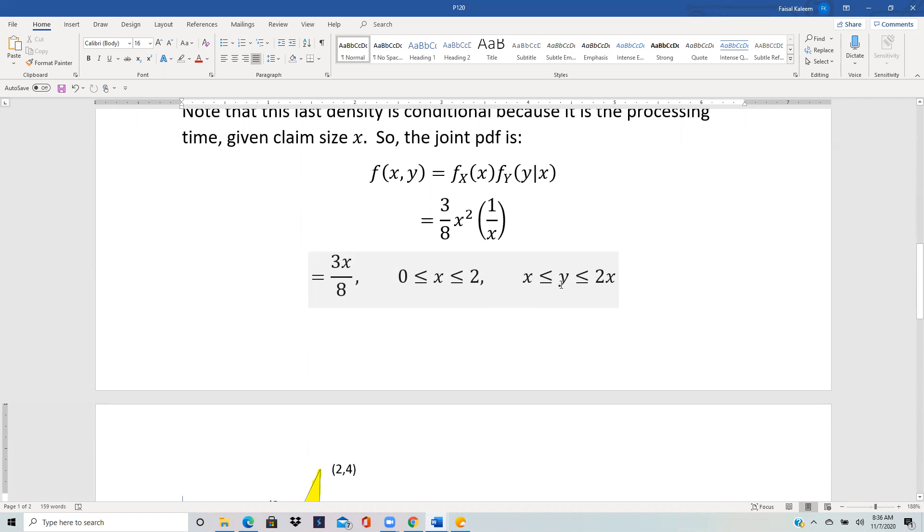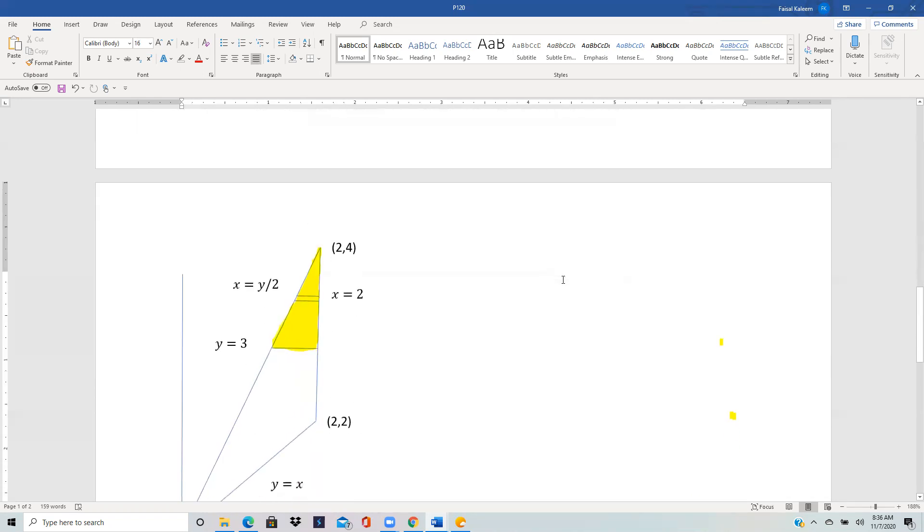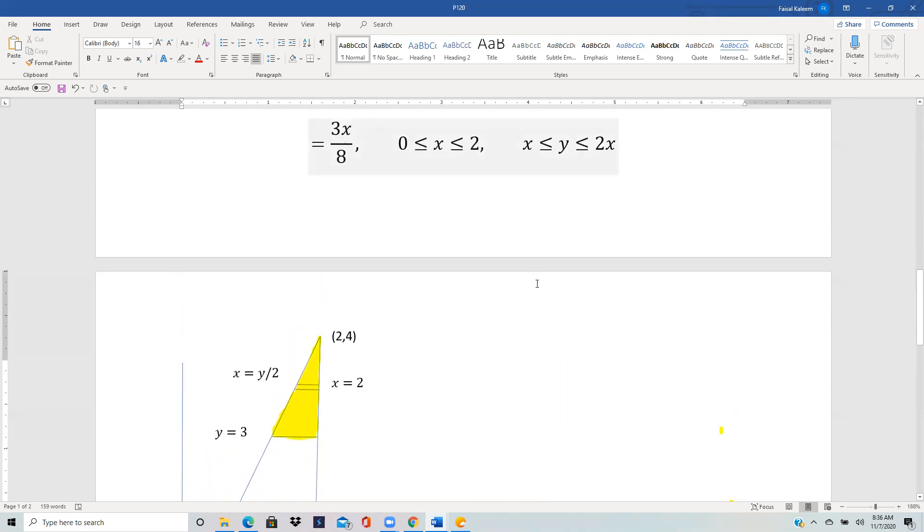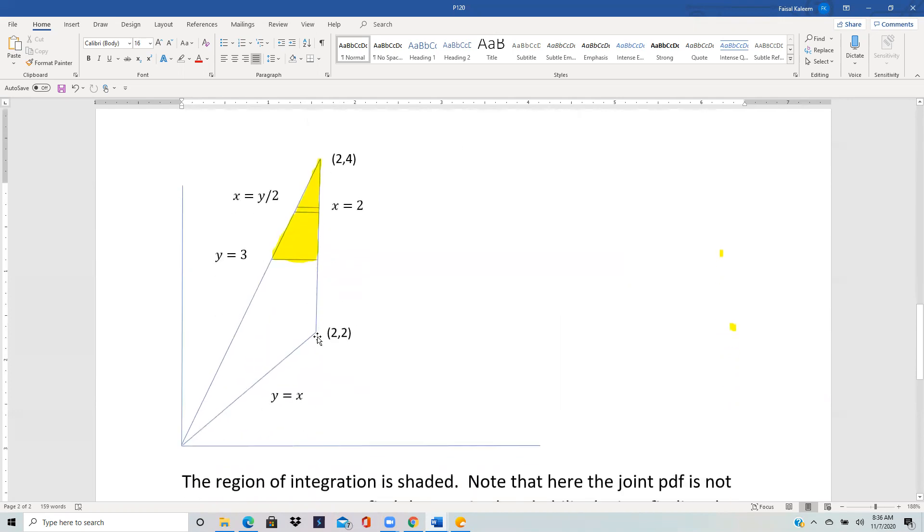So the region is drawn below. Y is going from x to 2x, so you draw the y equals x line and you draw the y equals 2x line. Instead of writing it as y equals 2x, I've written it as x equals y by 2 because that's how we'll be using it in integration. And then the x goes from 0 to 2, so this is the x equals 2 line. Therefore, this whole triangle, the big triangle, is the total region.